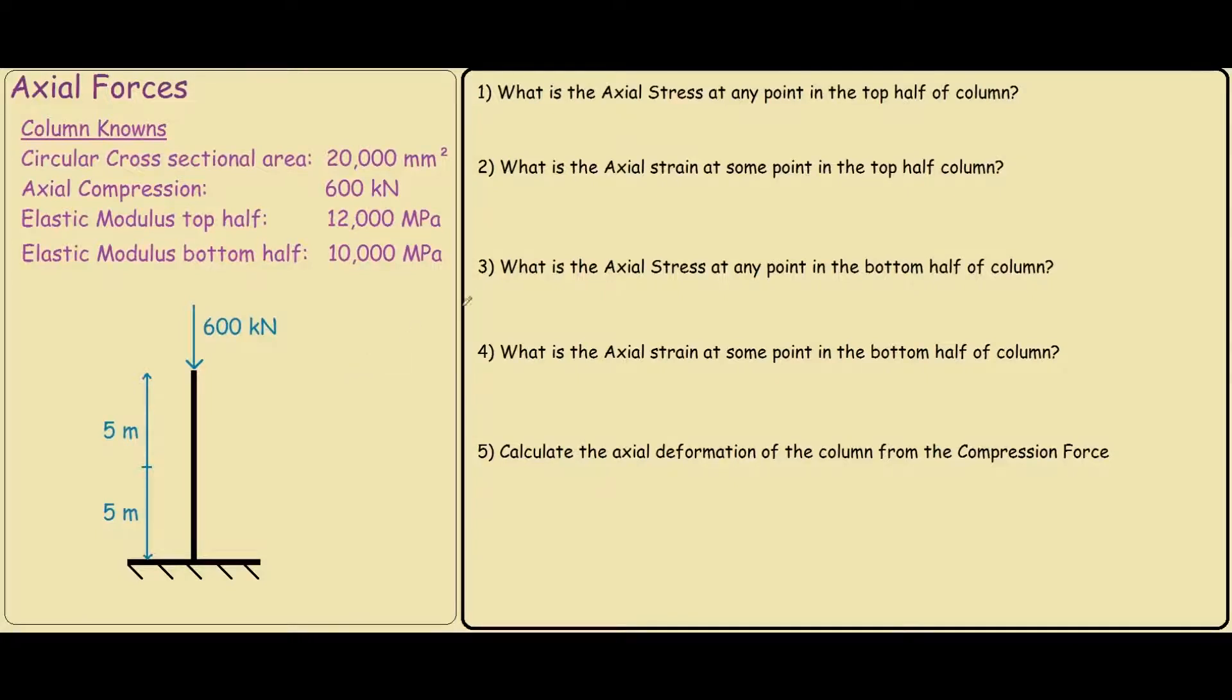Hey guys, the aim of this video is to work out the axial stress and axial strain on this column over here. So we are given four pieces of information. We are told that the column has a cross sectional area of 25,000 mm² and it has a compressive load of 600 kN.